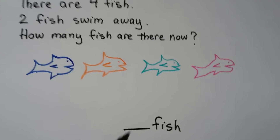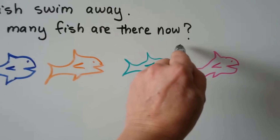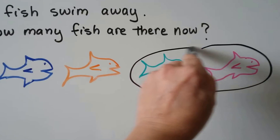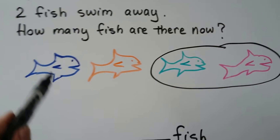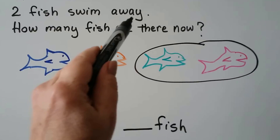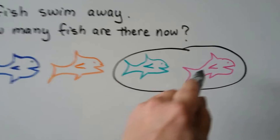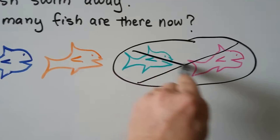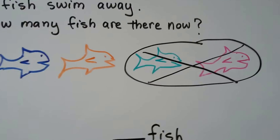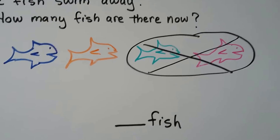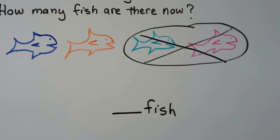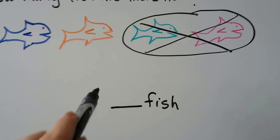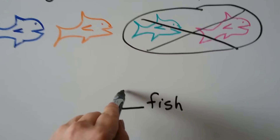Let's circle two fish. Two fish swim away, so let's cross them out. How many fish are there now? One, two. Two fish.